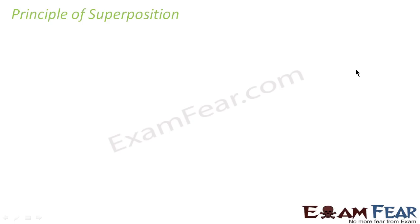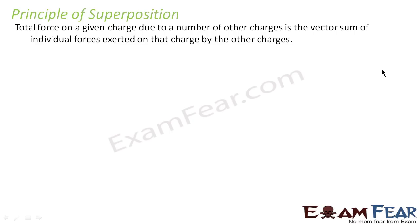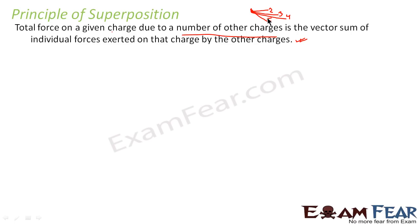The net force on one charge will be because of the other nine charges. So the principle of superposition tells us about the scenario where we have to calculate the net electrostatic force on one charge due to multiple charges present in the system. The principle of superposition states that the total force on a given charge due to a number of charges is the vector sum of the individual forces exerted on that charge by the other charges.